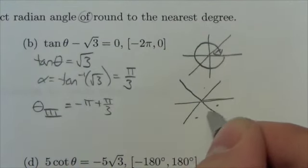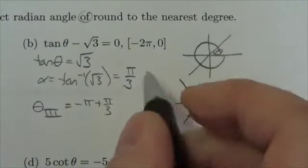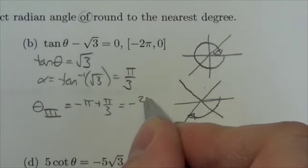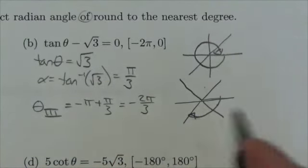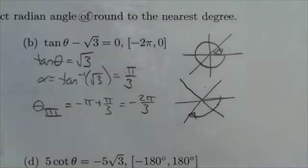I'm measuring in the negative direction, starting here and rotating this way. To get to the third quadrant, I just need two of those thirds, so this is -2π/3.